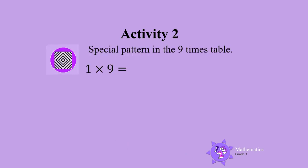Activity 2. Let's now investigate some special patterns in the Nine Times Table. Let's add the tens and the ones in the answer. There are 0 tens and 9 ones, so 0 plus 9 is 9.